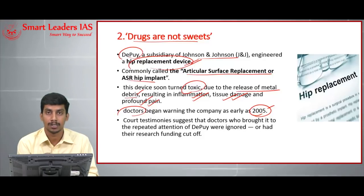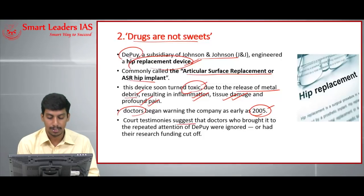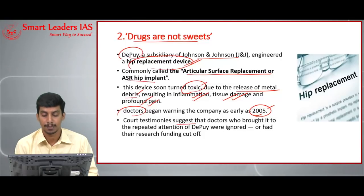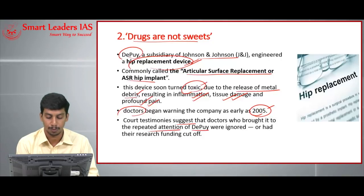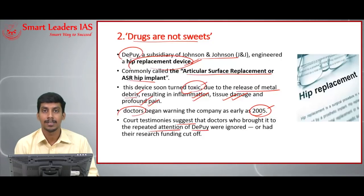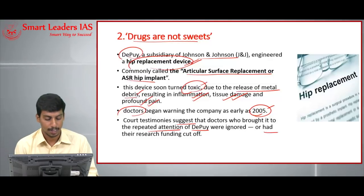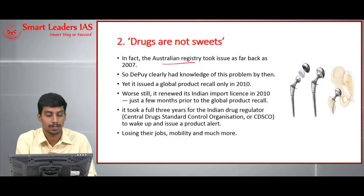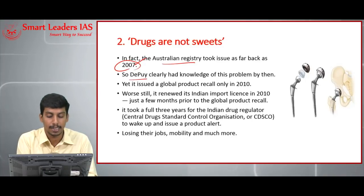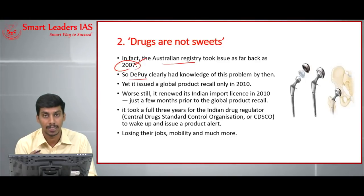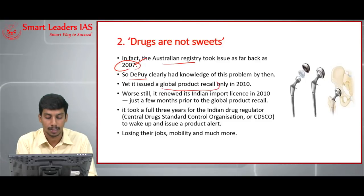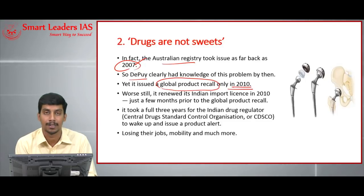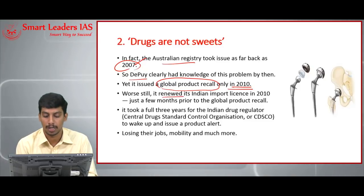Doctors began warning the company as early as 2005 that this device was turning toxic, but the company ignored them. Court testimony suggests that doctors who repeatedly brought the issue to DePuy's attention were ignored or had their research funding cut off. Australia's registry flagged the issue as far back as 2007, meaning DePuy clearly had knowledge of the problem very early.